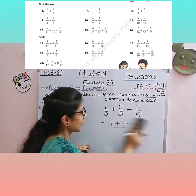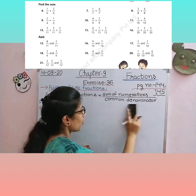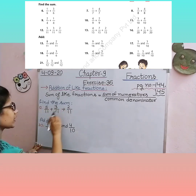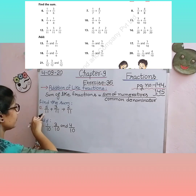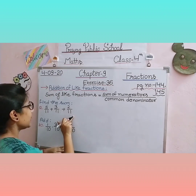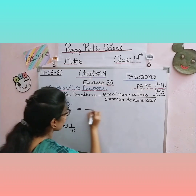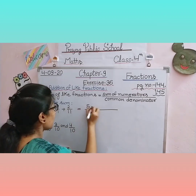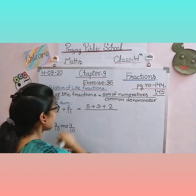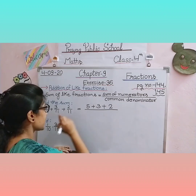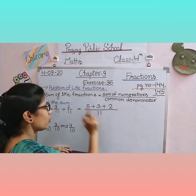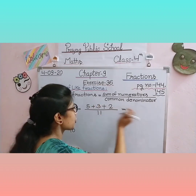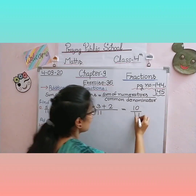Question number 12: 5/11 + 3/11 + 2/11. Hume inhein add karna hai toh hum isse formula pe based solve karenge. Numerator kya hoga — sum of numerators: 5 + 3 + 2. Common denominator sirf ek baar likhenge — upon 11. Ab solve karte hain: 5 + 3 = 8, 8 + 2 = 10. Answer: 10 upon 11.